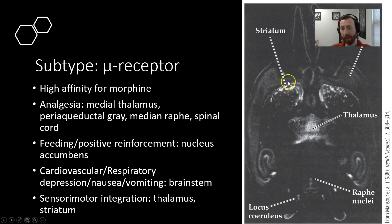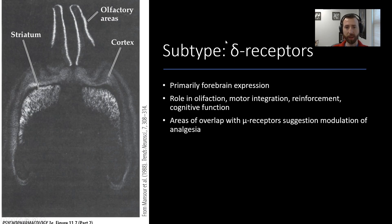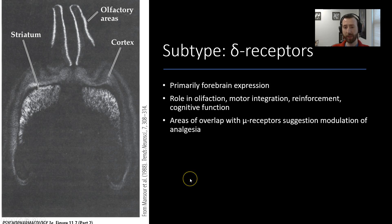You can see over here on this autoradiograph the density of the expression of these receptor types. The more brightly colored areas on the autoradiograph are areas of the highest expression. Here we're going to be talking about delta receptors. These are expressed primarily in the forebrain, as you can see from the autoradiograph. These play a role in olfaction, motor integration, reinforcement, and cognitive function. There's also some overlap with areas expressing mu-opioid receptors, suggesting they play a role in the modulation of analgesia, or suppression of pain.